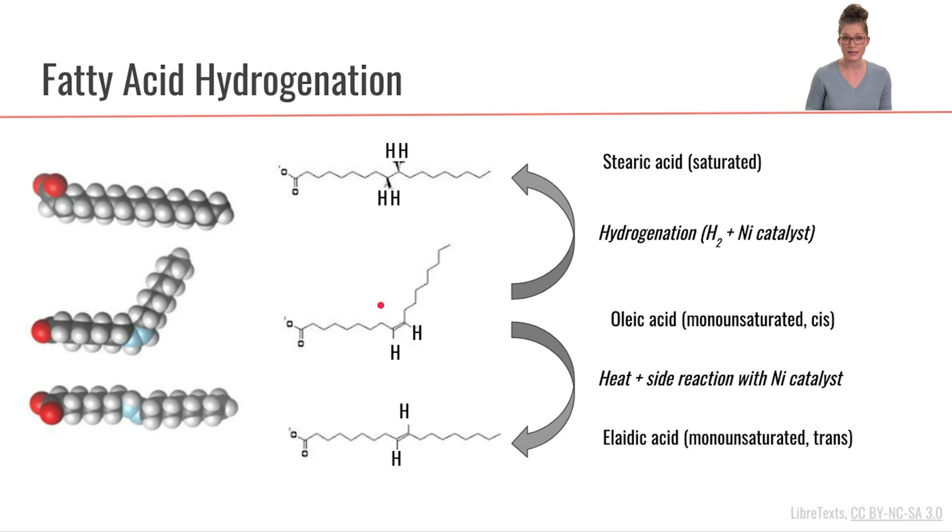The side product that can occur during this hydrogenation process creates what are called trans fatty acids. And we can see that it still has a double bond in it but that we have hydrogens on either side of that double bond and that makes a trans fatty acid.